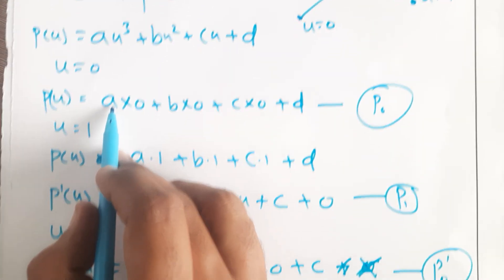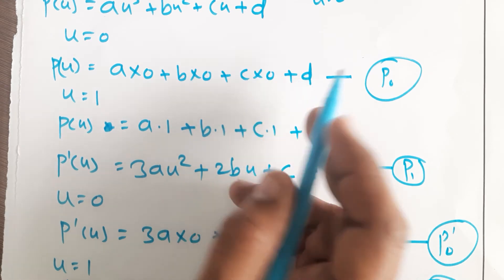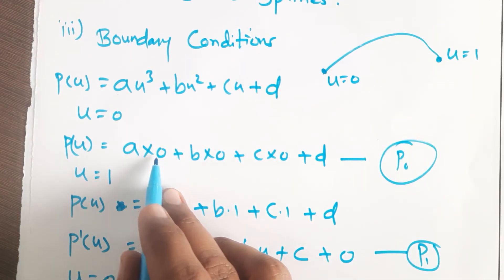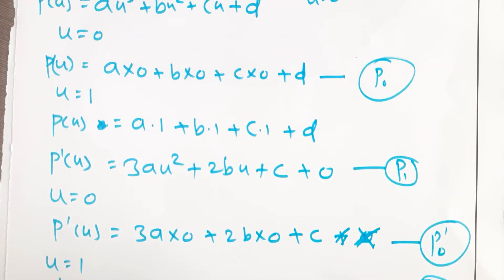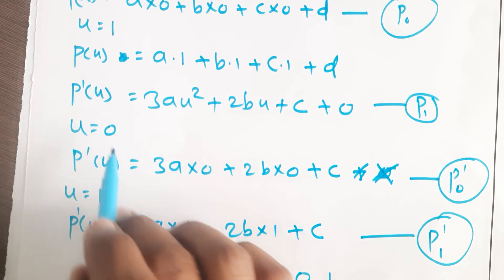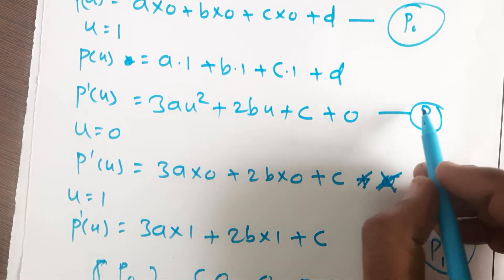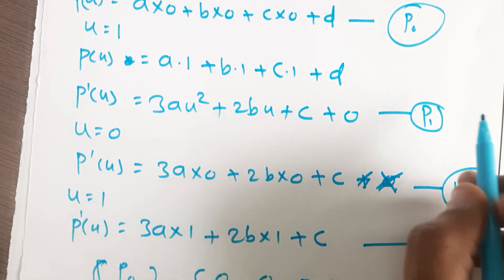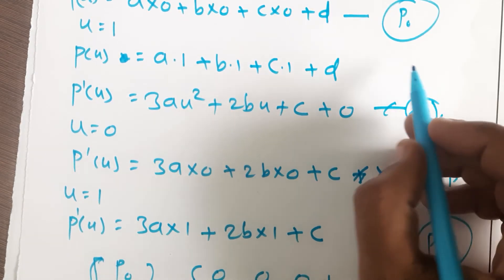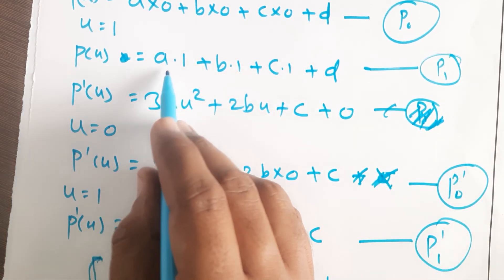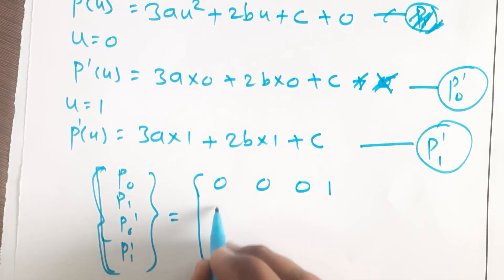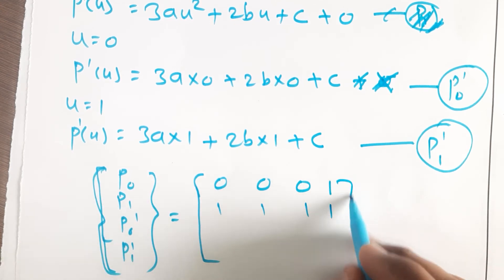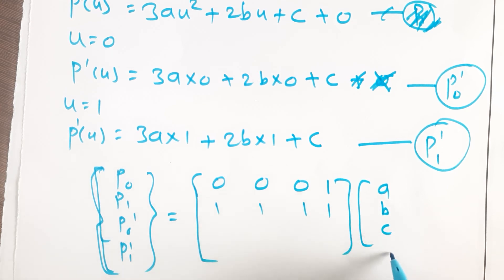For p(0), the coefficients are 0, 0, 0, 1 — since only the d term survives when u = 0. For p(1), all terms survive with coefficient 1, so the row is 1, 1, 1, 1. The next matrix is written as [a, b, c, d]ᵀ. Multiplying p(0) row gives 0·a + 0·b + 0·c + 1·d, which matches our earlier equation.